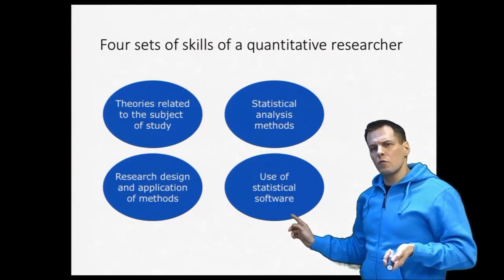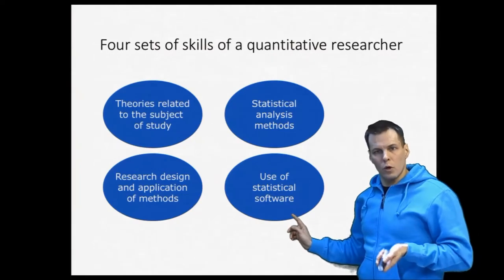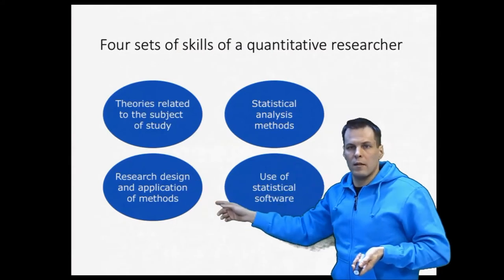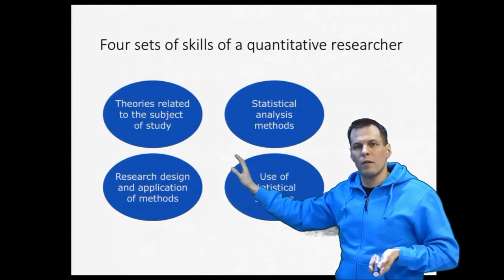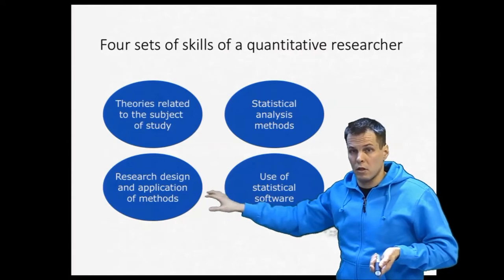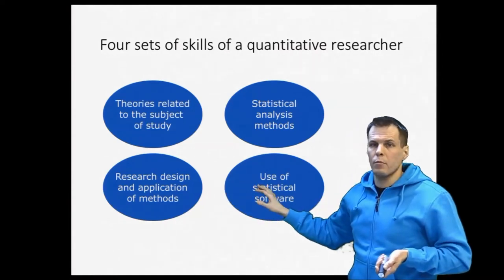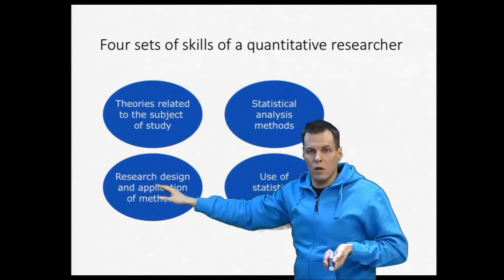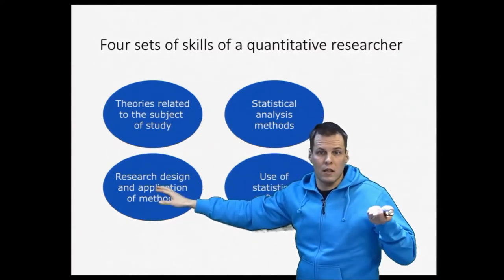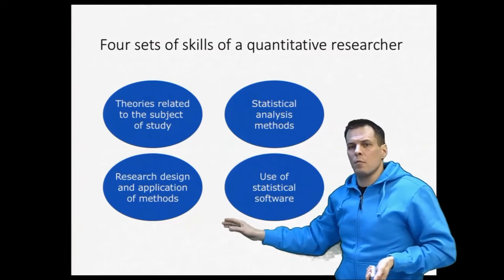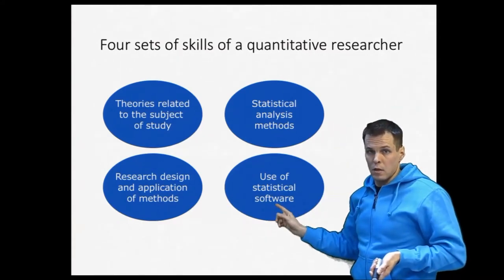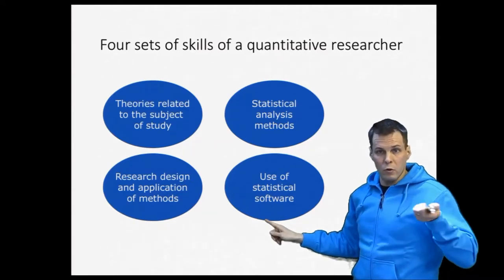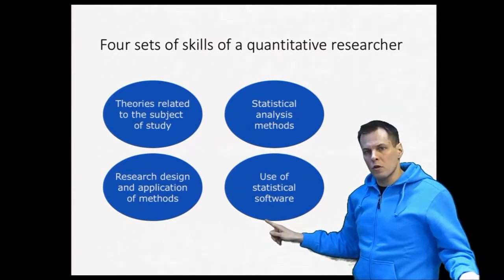Which one of these is the most important one depends on what you want to specialize in. So no one is a master of all of these four, and typically it pays off to be really good in one of these and just have basic understandings of others. For example, if you are really great in theory and you are good in research design, you are good in collecting data, then you can always find someone else to help you with the analysis, with the statistical methods and use of statistical software parts. Then you can write the paper together, or it also works the other way around.